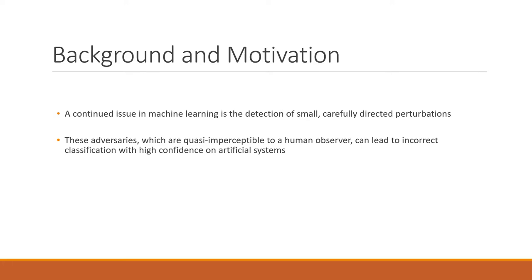As we learned in class, a continued issue in machine learning is the detection of small, carefully directed perturbations. These adversaries, which are oftentimes quasi-imperceptible to the human eye, can lead to incorrect classification with high confidence on artificial systems. A classic example would be an image of a human skier which, when its pixels are perturbed in a way unperceivable to the human eye, yet when put through a classifier, is classified as a dog.